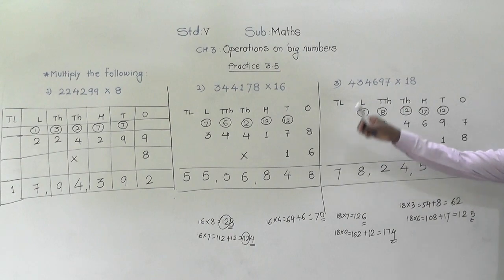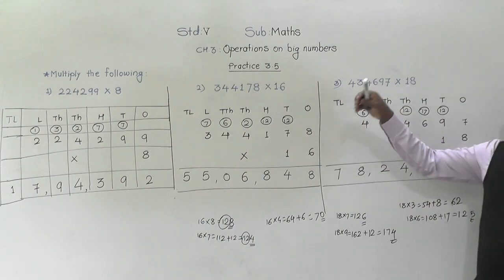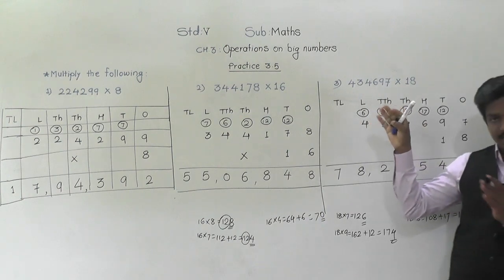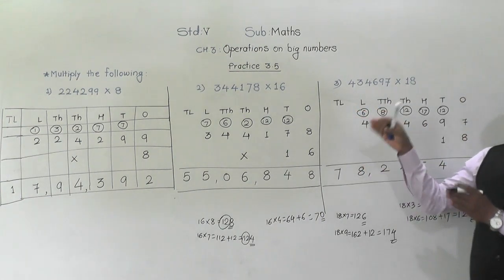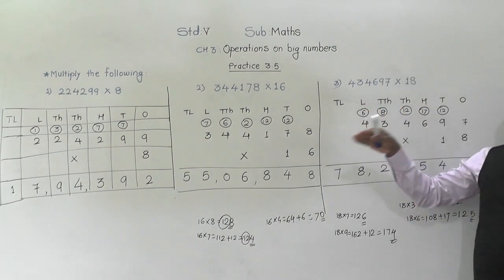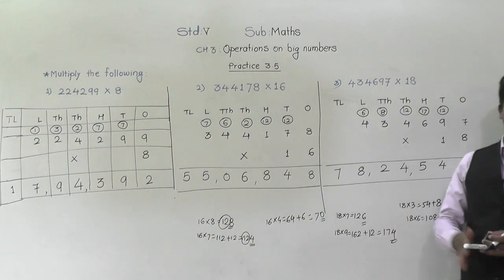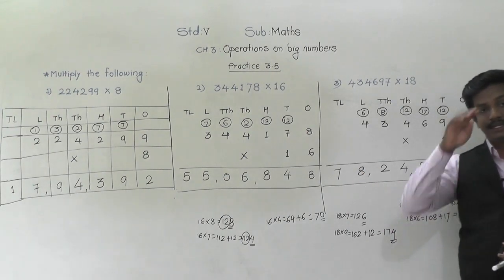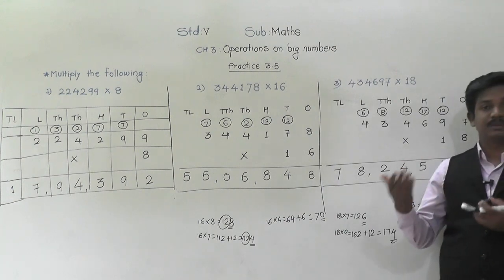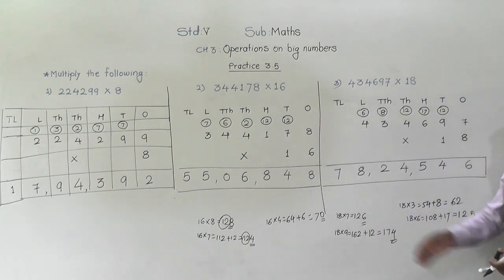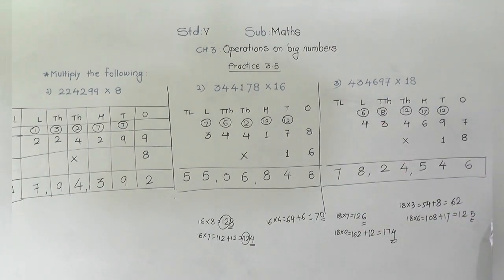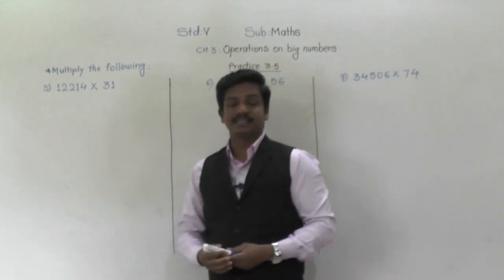So this way we have to multiply numbers by a one-digit or two-digit number. You should know the tables at least till 20 so you can multiply directly. If you don't know the table or the number is more than 20 or 30, then we will learn how to multiply by a three-digit number after this. Pause this video and write this in your notebook.